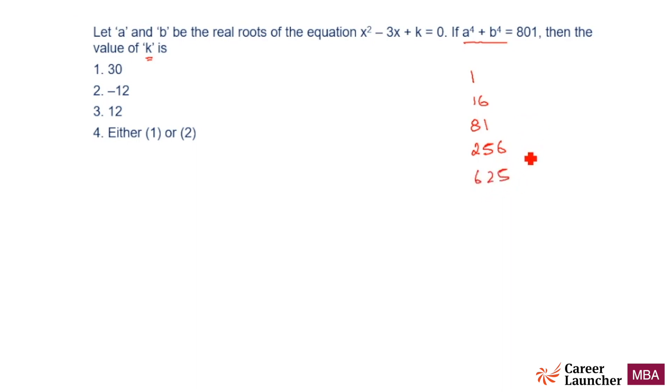Now if I look at any of these, they don't add up to 801. What this means is a and b are not going to be integers. So this is indicating to me that a and b are not integers.